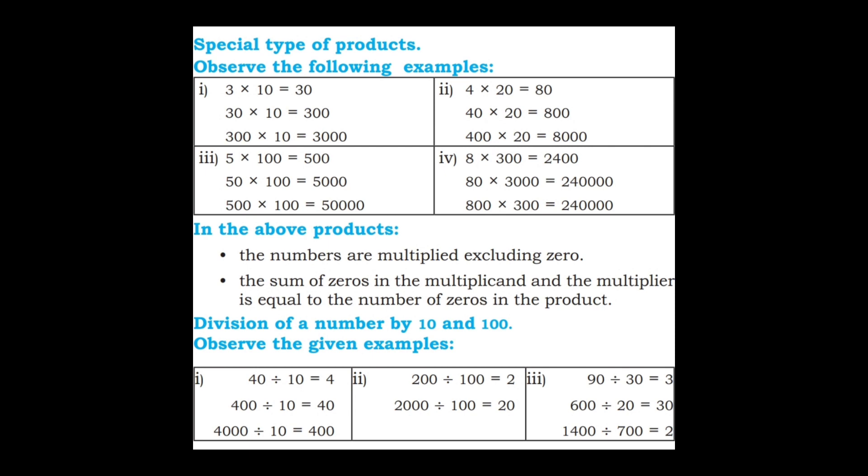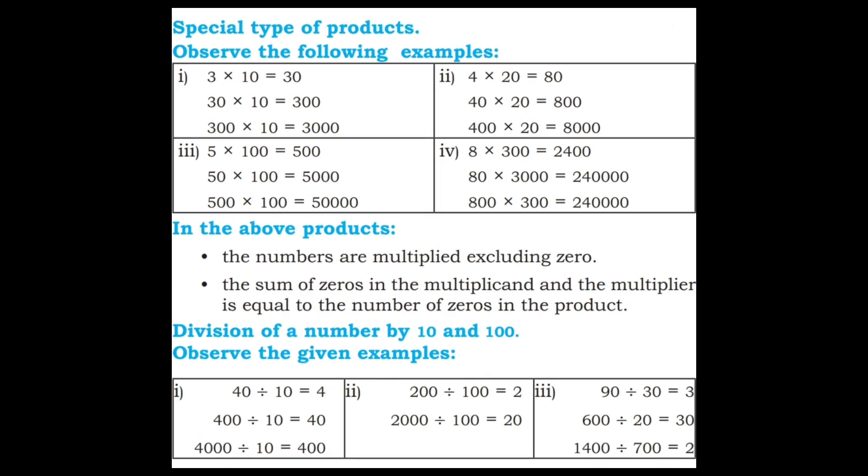In the above products, the numbers are multiplied excluding zeros. The sum of the zeros in the multiplicand and the multiplier equals the number of zeros in the product. For example, 40 into 20: 4 twos are 8, and 40 has one zero, 20 has one zero, so the product has two zeros, giving 800.